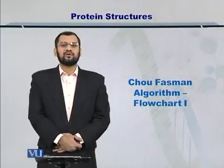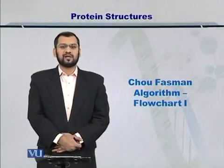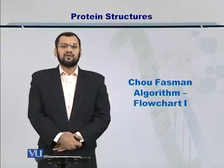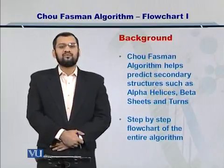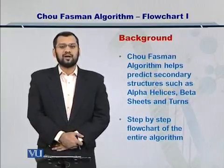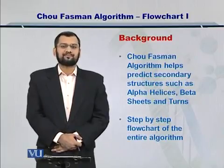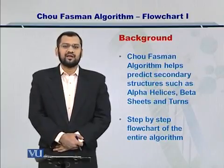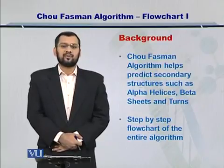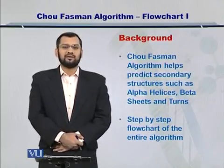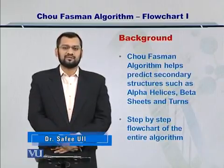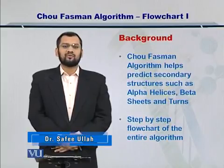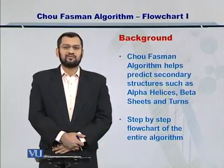In this module I am going to talk about the Chou-Fasman algorithm through a flow chart. Using the Chou-Fasman algorithm, you can predict the secondary structures that can be formed by a sequence of amino acids in a protein. There are some amino acids which prefer to form alpha helices, while others prefer to form beta sheets, while some others tend to form loops and beta turns. In this module, I am going to focus on the flow chart for beta sheets using the Chou-Fasman algorithm.